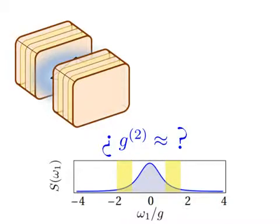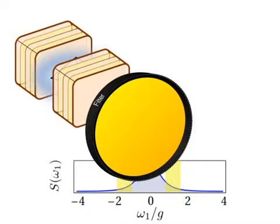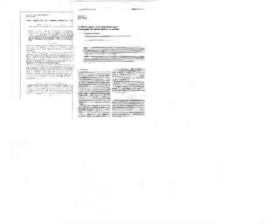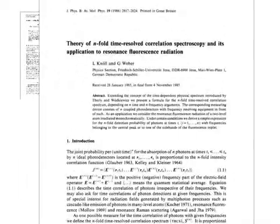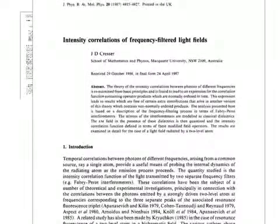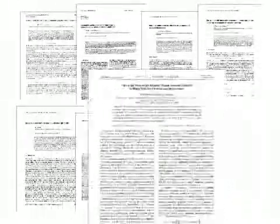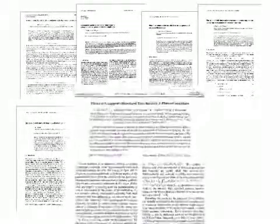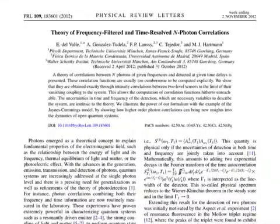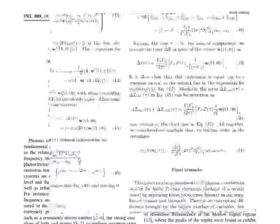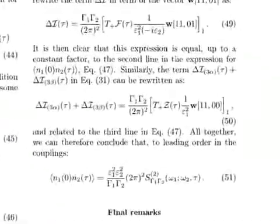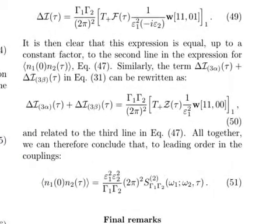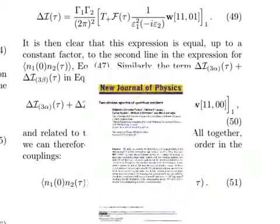Experimentally, this is an easy thing to accomplish — one merely interposes a filter before counting photons. Theoretically, however, such questions are extremely difficult to resolve. Despite the best efforts of theorists since the late 1970s, only the force of heavy algebra and various approximations would yield results, and then only for particular cases of simple systems. In Physical Review Letters, we have recently presented a way around this obstacle and show how to readily compute Gn of frequency-filtered photons with no restriction whatsoever on the number of photons or on the type of system.